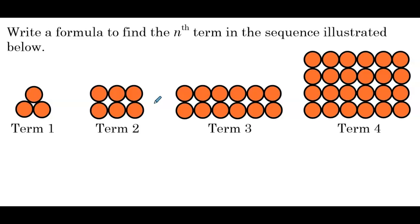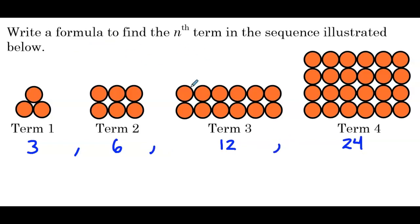Write a formula to find the nth term in the sequence illustrated below. We have orange circles: the first term has 3, next 6, then 12, then 24. Let's write out the numbers: 3, 6, 12, 24. Looking at the terms, to go from one term to the next we're multiplying by 2 each time — so we have a common ratio.